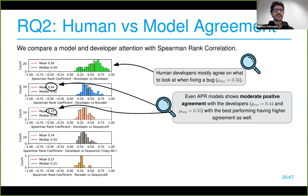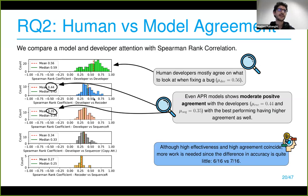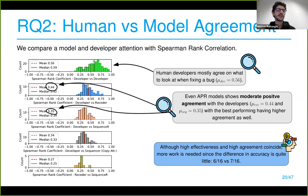Human developers mostly agree with each other, consistent with previous results. There is a moderate positive human-model agreement in bug fixing as well. Recorder, which fixed one more bug, also had slightly higher agreement with humans — which doesn't disprove the earlier claim that higher human-model agreement might coincide with better performance, but it's not strong enough to confirm it definitively given the small dataset.